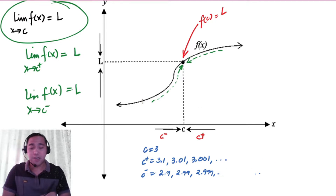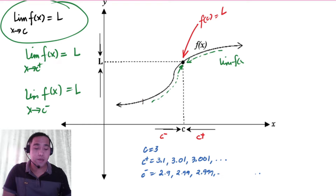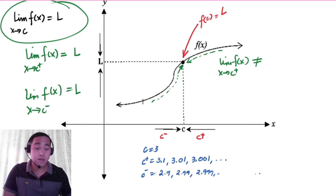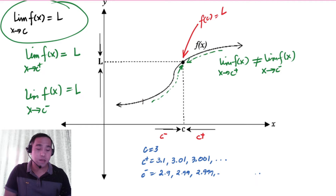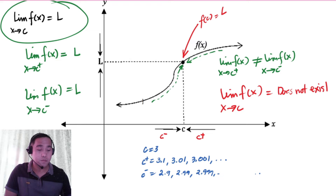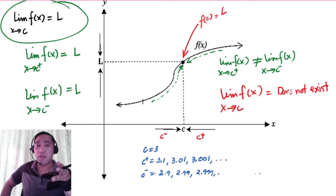Take note that when the limit of f of x as x approaches C from the left is not equal to the limit of f of x as x approaches C from the right, that is the only time that the limit of f of x as x approaches C does not exist. This is because the right-hand side limit values are not equal to the left-hand side limit values. So that ends our video. Thank you for watching.